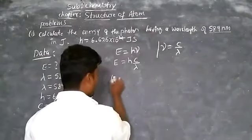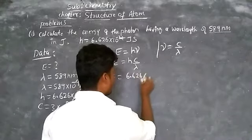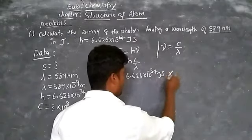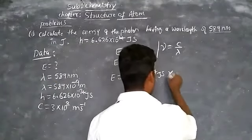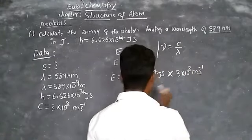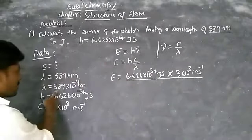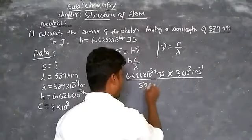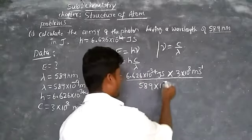Substitute here: E equals H, which is 6.626 × 10⁻³⁴ joule·second, into speed of light C equals 3 × 10⁸ meters per second, all divided by lambda equals 589 × 10⁻⁹ meters.